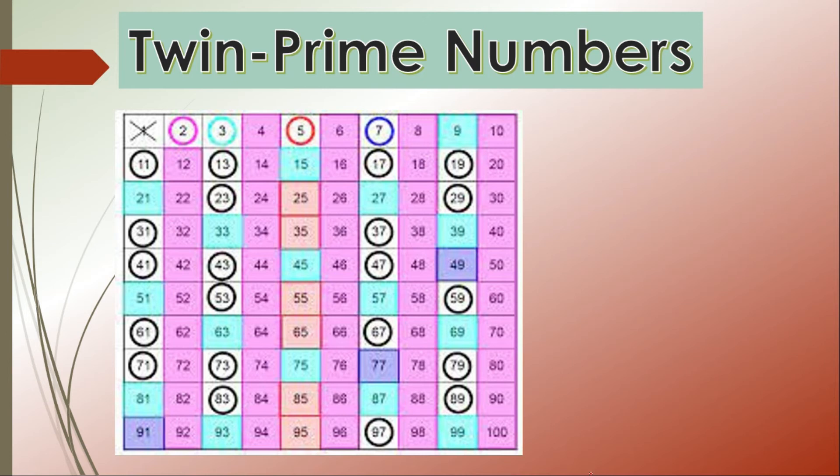So here you can see the prime numbers are circled over here and the composite numbers are colored. So here we have 2, 3, 5, 7, 11, 13, 17, 19, 23, 29, 31 and so on - these are the prime numbers. Now for finding out twin prime numbers, we need to see two prime numbers which have only one composite number between them.